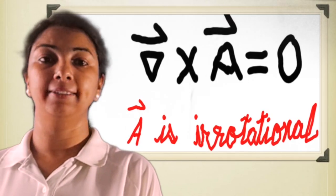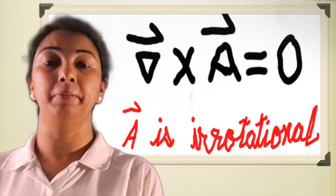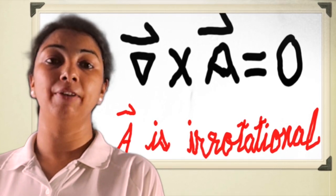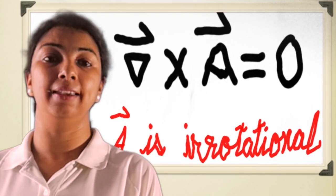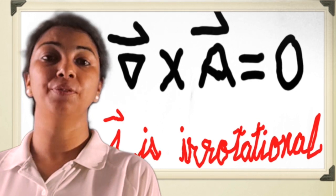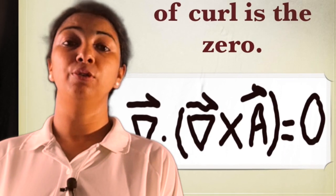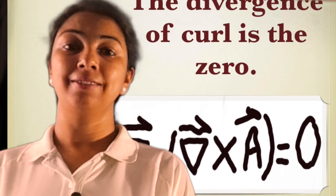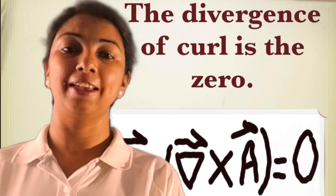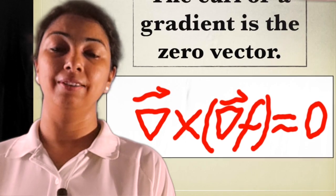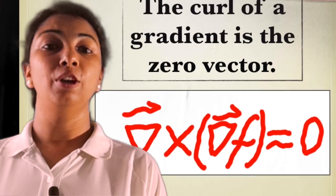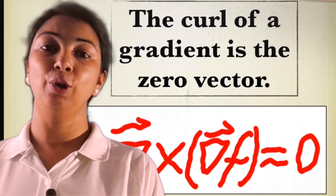If curl of the vector field vanishes, that means del cross A vector equals zero, we can say A vector, that is vector field, is irrotational. Then two important theorems arise from these functions: first one is the divergence of a curl is zero, the second one is the curl of gradient is zero vector.